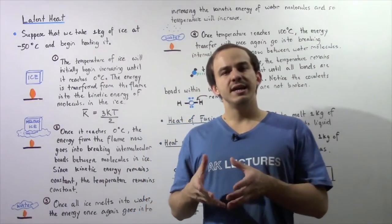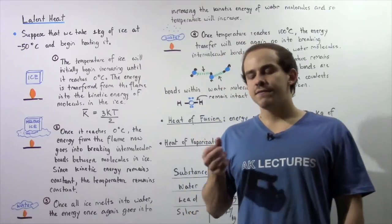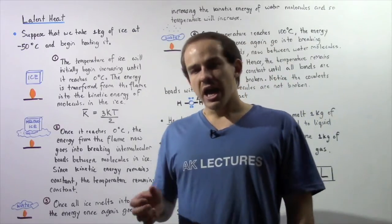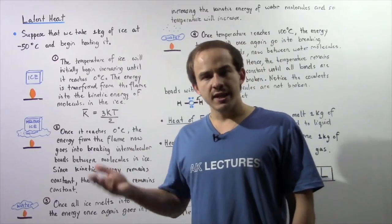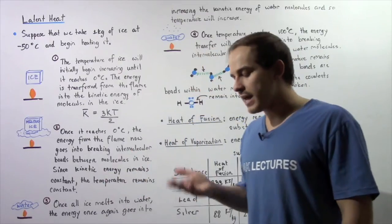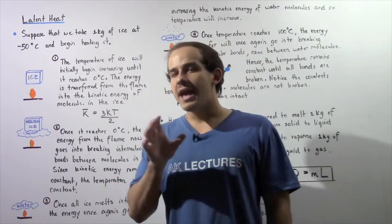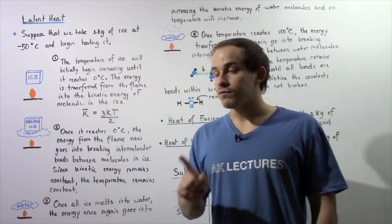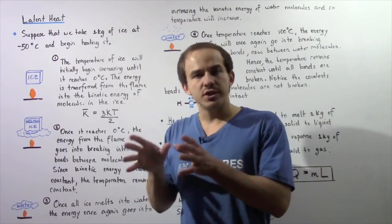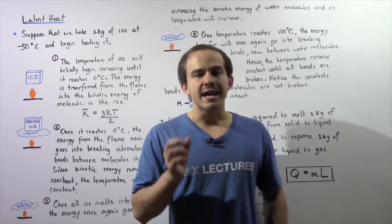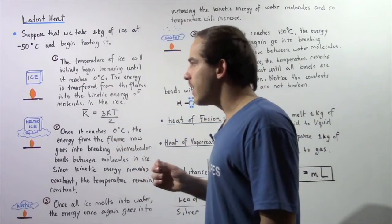Let's suppose that we begin with a one kilogram block of ice at negative 50 degrees Celsius. We take that block of ice and place it over a heat source — let's say over a flame. Energy will begin to flow from the flame into the ice, and that energy will go into increasing the kinetic energy of the molecules found within the block of ice.